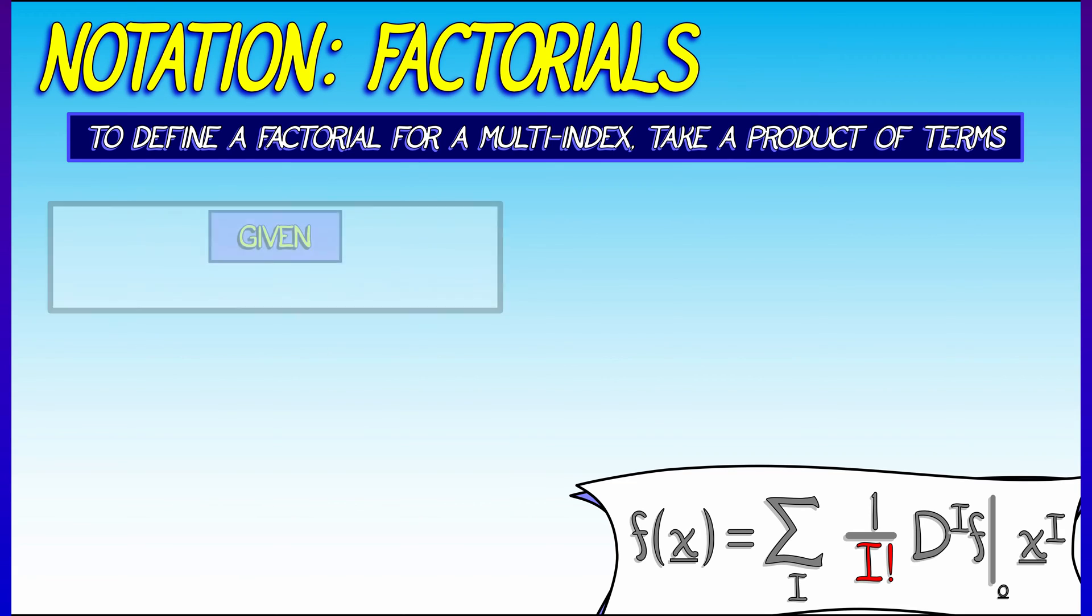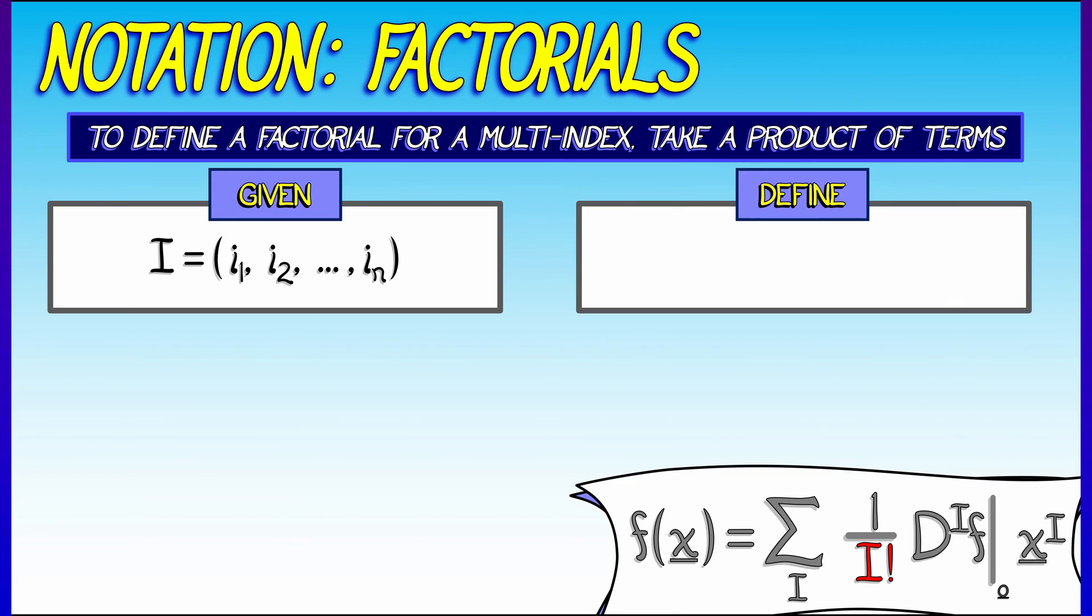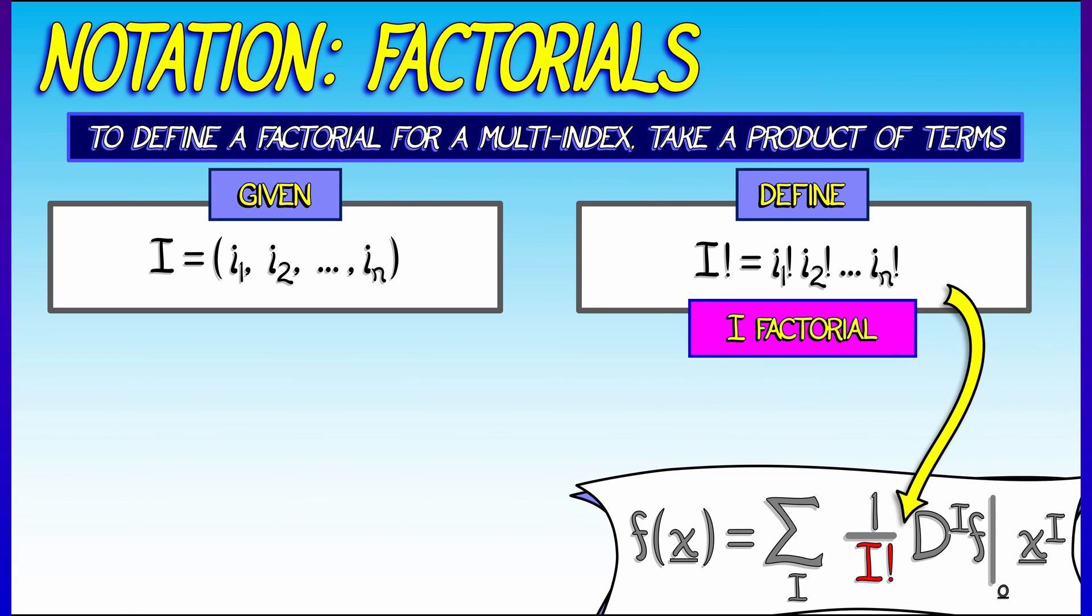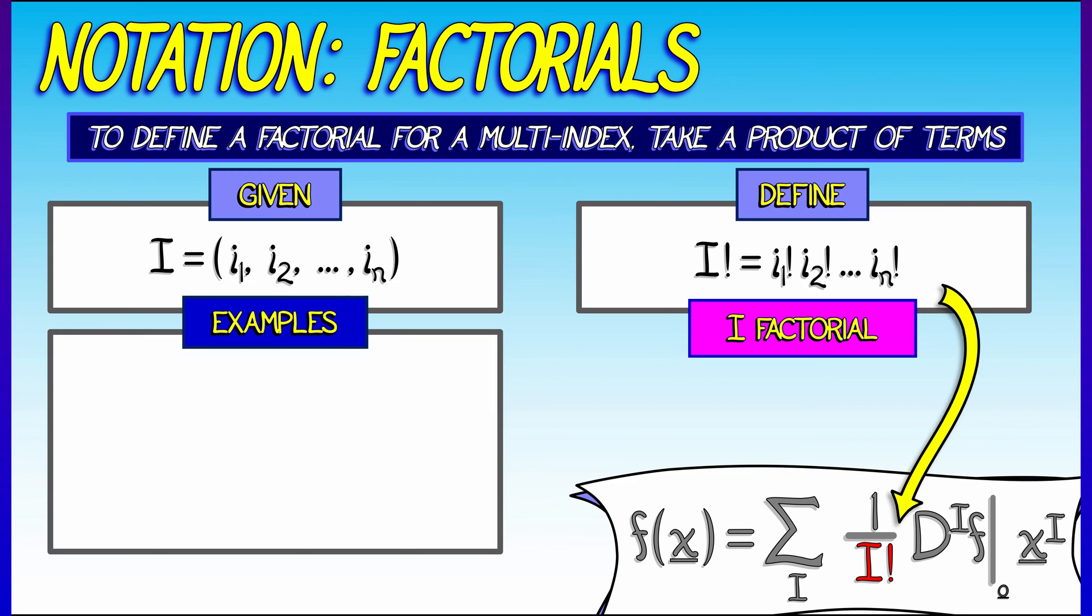Well, here's the definition. Given a multi-index i, i1 up through i_n, then how do we define the factorial of this? We're going to say that it is the product of the individual factorials: i1 factorial times i2 factorial, all the way up through i_n factorial. Does this make sense? Yeah, that's really the right way to do it. That's what we're going to be dividing by in this Taylor series formula.